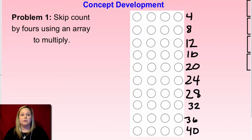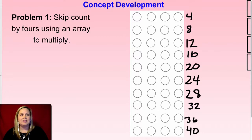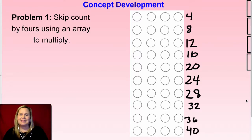The next part of what we're going to do is find some expressions that match. Before we do that, do you guys notice what we were counting by in this array? Yeah, we were counting by fours because each row had four in them. Good job.